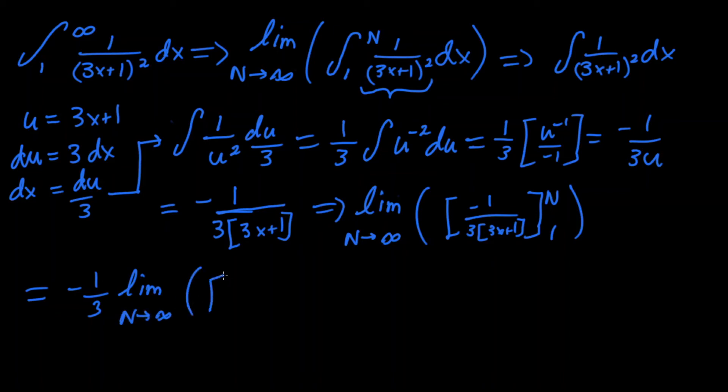It's just going to simply be 1 over 3x plus 1, isn't that easier to look at? Now let's put that between 1 and n.